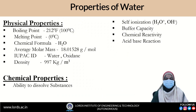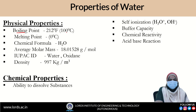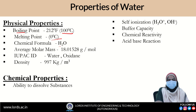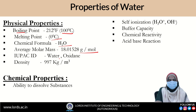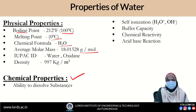Coming towards the properties of water. First of all, I will tell you about the physical properties. Water boils at 100 degrees centigrade. Its melting point is 0 degrees centigrade. Its chemical formula is H₂O. Average molar mass is 18.0158 gram per mole and its IUPAC name is water, which is nothing but oxidane. Density of water is 997 kilogram per cubic meter. Coming towards its chemical properties — its ability to dissolve substances: many substances can easily dissolve in water.